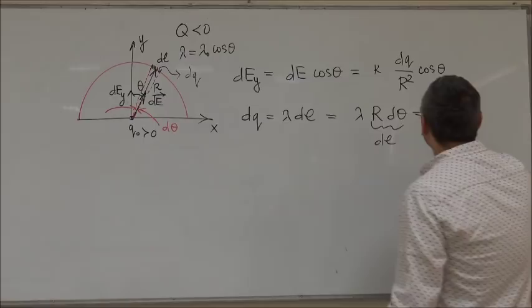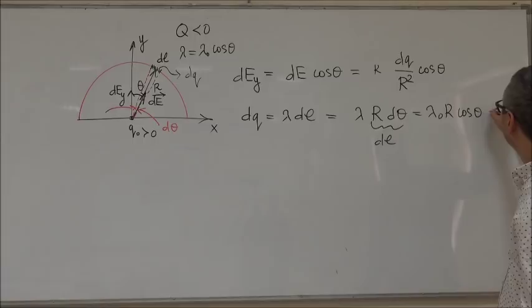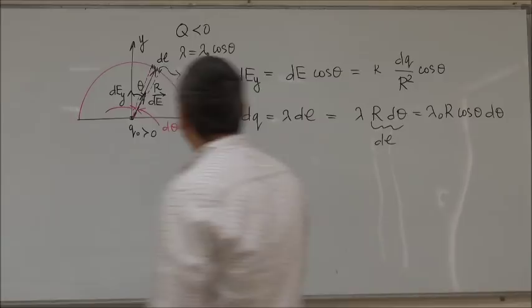So, you can then substitute for lambda. So, this becomes lambda 0 R cos theta D theta.